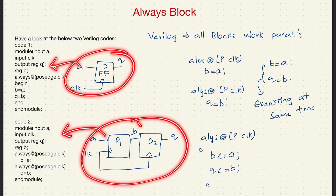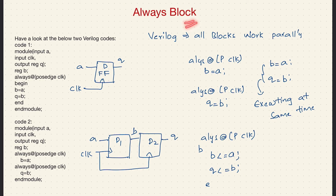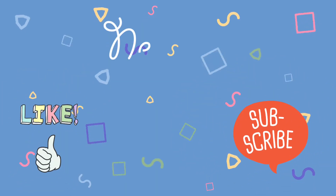This example is to make you understand how the always block works in Verilog code. If you have any questions you can comment and I will reply. That's it guys, see you with the next question — have a good day, bye bye!